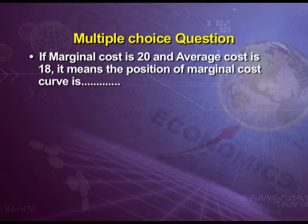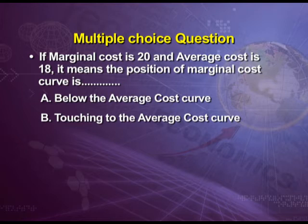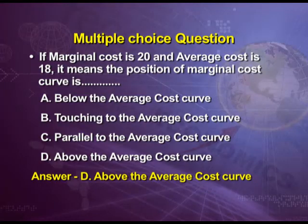Question six: if marginal cost is 20 and average cost is 18, the position of the marginal cost curve is — below the average cost curve, touching the average cost curve, parallel to the average cost curve, or above the average cost curve? Since marginal cost of 20 is greater than average cost of 18, and from the diagram we know that when marginal cost is higher than average cost, the marginal cost curve is above the average cost curve. Therefore, the answer is option D.